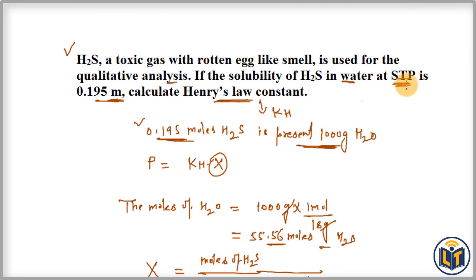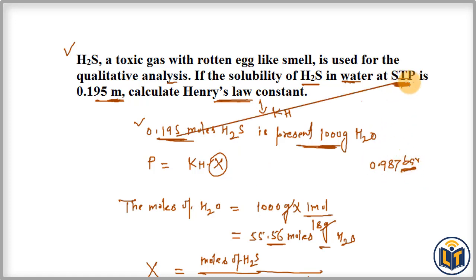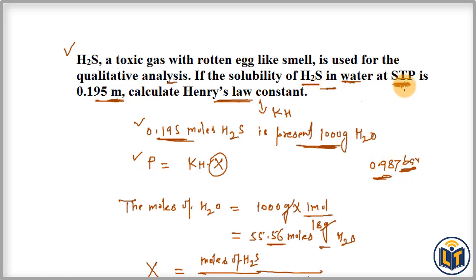At STP the solubility of H2S in water is given at STP conditions. At STP, the pressure is 0.987 bars. This is a constant value you need to remember. So the P value is 0.987 bars — this is not given in the problem but you need to remember this value. Now we have both P and X, and we can calculate KH.